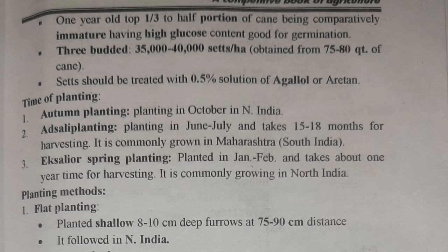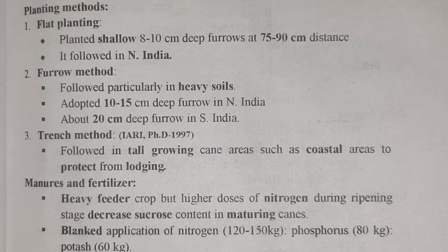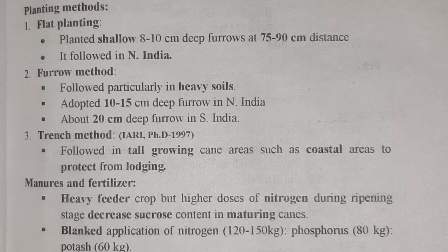Planting methods are flat planting, furrow method, and trench method. In flat planting, shallow furrows of 8 to 10 cm deep are made at a distance of 75 to 90 cm — common in North India. The furrow method is generally done in heavy soils: 10 to 15 cm deep in North India and about 20 cm deep in South India. The trench method is followed in tall-growing canes, such as in coastal areas, to protect against lodging.